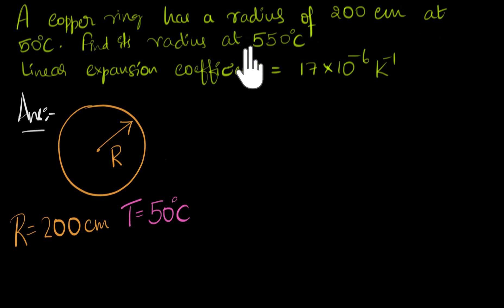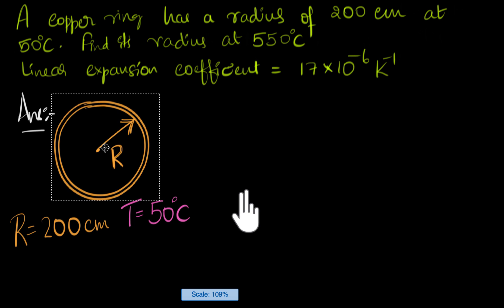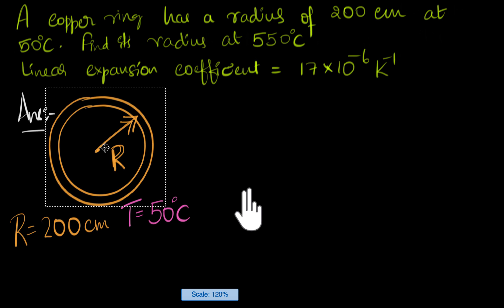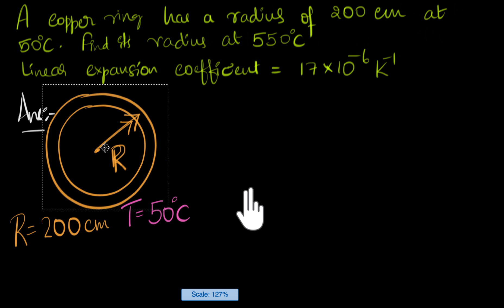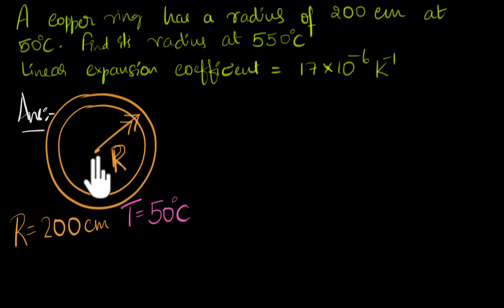We need to find its radius at 550 degrees Celsius. So you understand what's going on? We are heating it up, and its temperature is increasing. If you were to heat this up, then the temperature would increase and it would expand, and you might see something like this. Notice its radius also starts increasing as it expands. What we need to do is, when the temperature has reached 550 degrees Celsius, we need to calculate what the new radius is going to be.